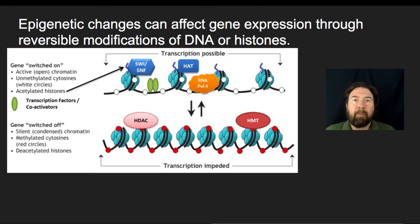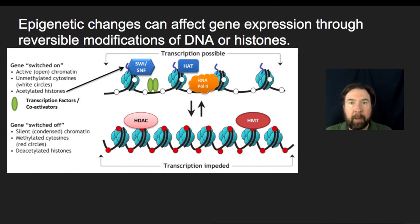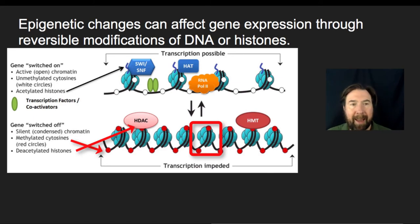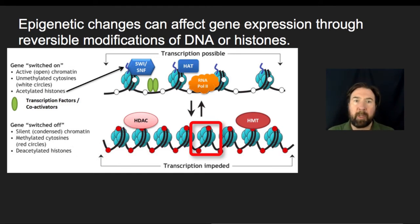Another factor that can play a role in turning genes on or off is pre-transcriptional regulation, which we often refer to as epigenetic changes. Epigenetic changes affect gene expression through reversible modification of DNA or histones. The DNA is wrapped around histones, and in some instances it is wrapped very tightly. When the gene is switched off, the chromatin has been condensed — the cytosines have been methylated and the histones have been deacetylated. This modifies both the DNA and histones to form a tight coil, making transcription impossible because the DNA is simply not available.